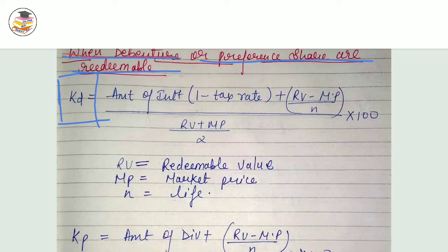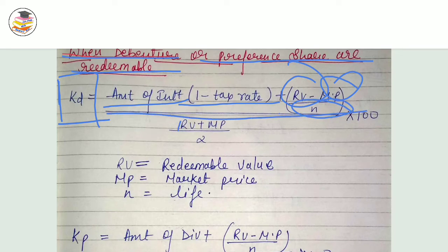When debentures are of redeemable nature, the cost of debt formula is: amount of interest multiplied by (1 minus tax rate), plus RV minus MP divided by N,